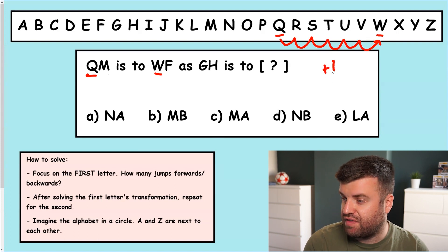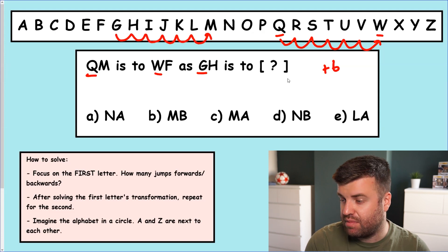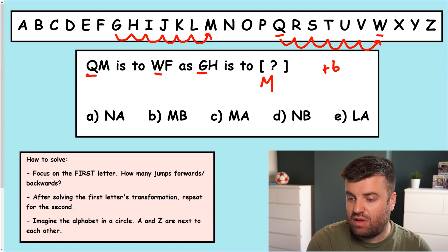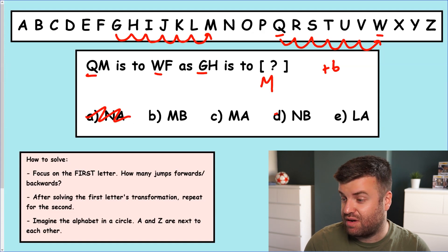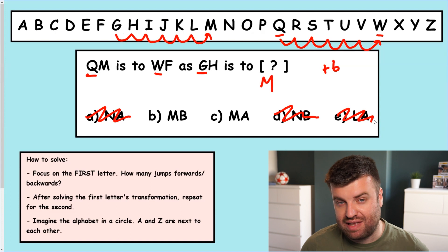So we've got a plus six jump for our first letter. So our G is going to have one, two, three, four, five, six, which is an M. So our first letter is an M. I always like to use deduction, guys. Going to get rid of answers. It can't be. So we're down to two already. If we were struggling for time in the test and we had five seconds left, at least now we have a one in two chance of guessing the right answer.